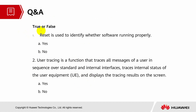Q&A session — true or false. Number one: Reset is used to identify whether software is running properly. The answer is false. Number two: User tracing is a function that traces all messages of a user in sequence over standard and internal interfaces, and traces the internal status of the user equipment, displaying the tracing results on the screen. The answer for this is true.